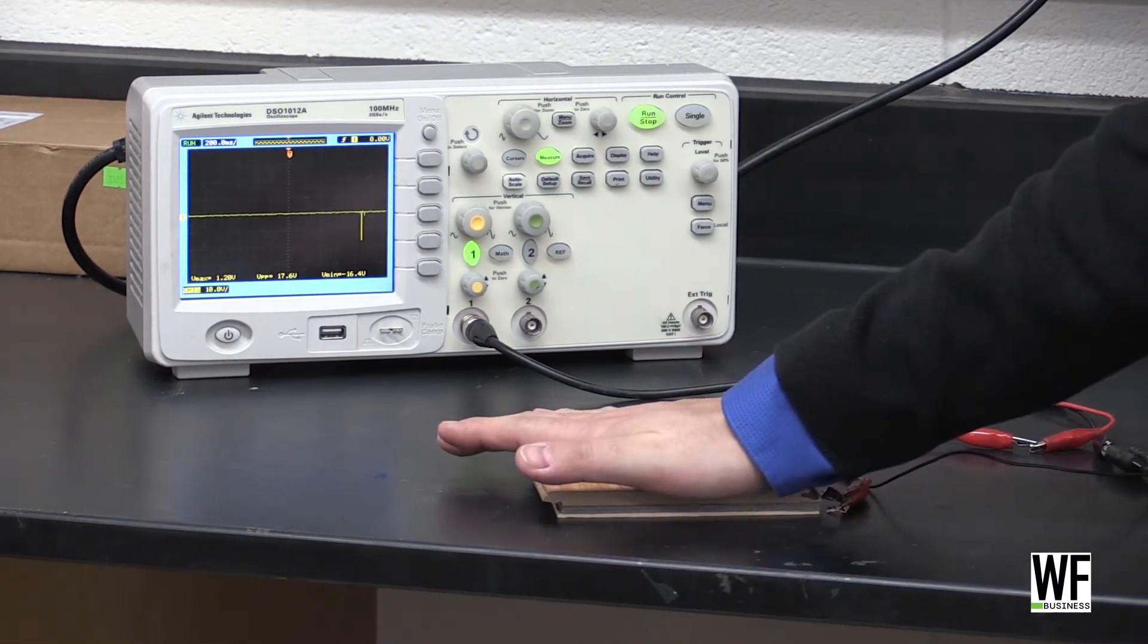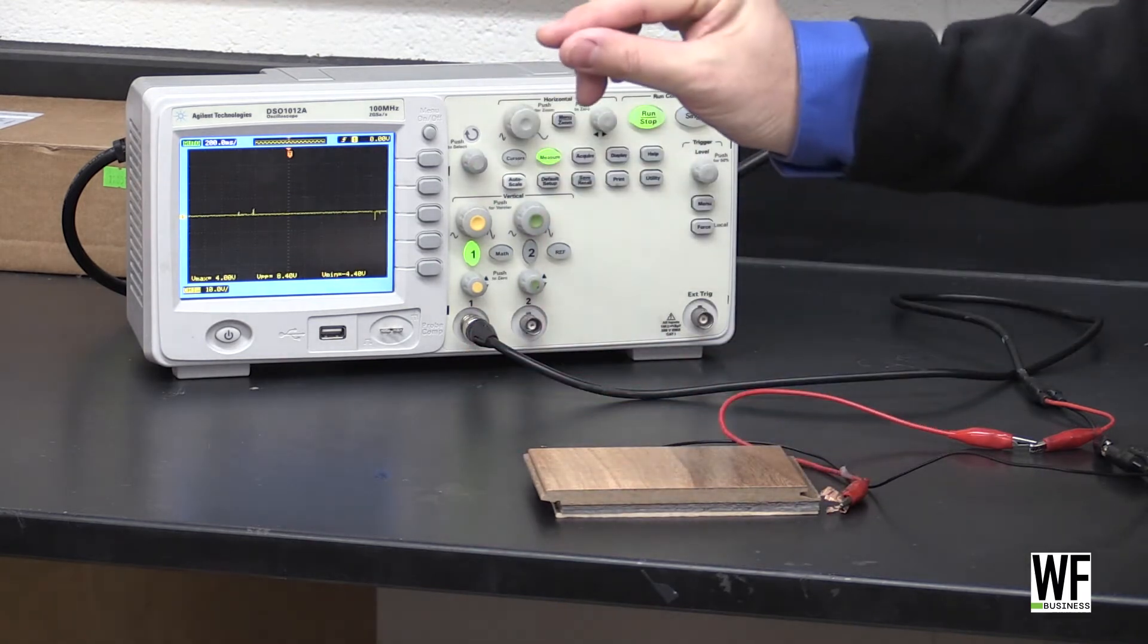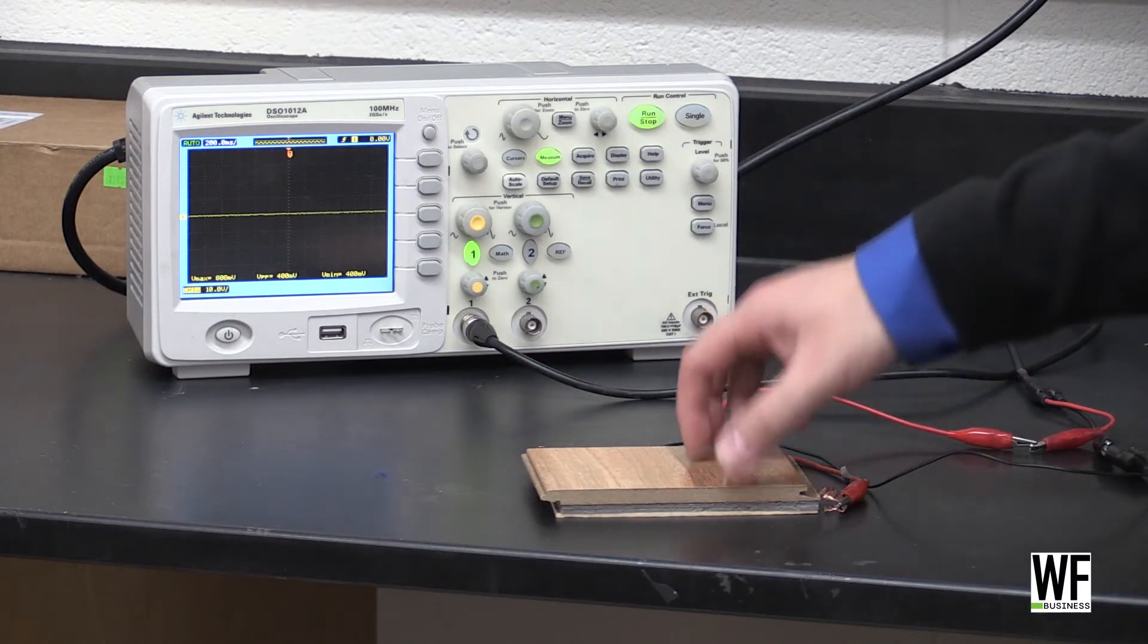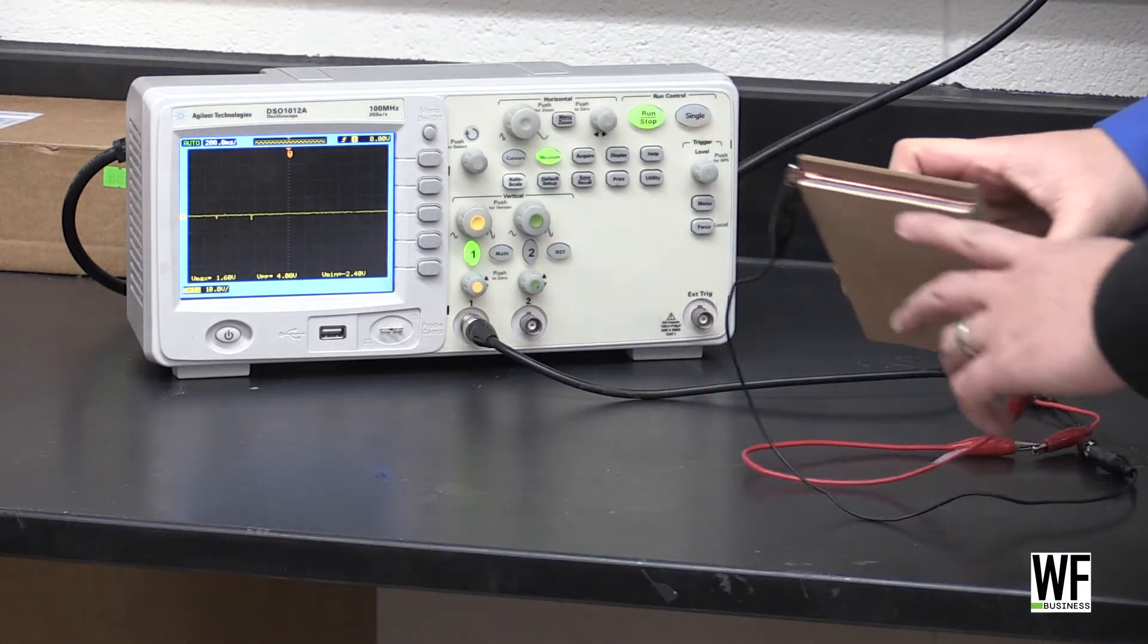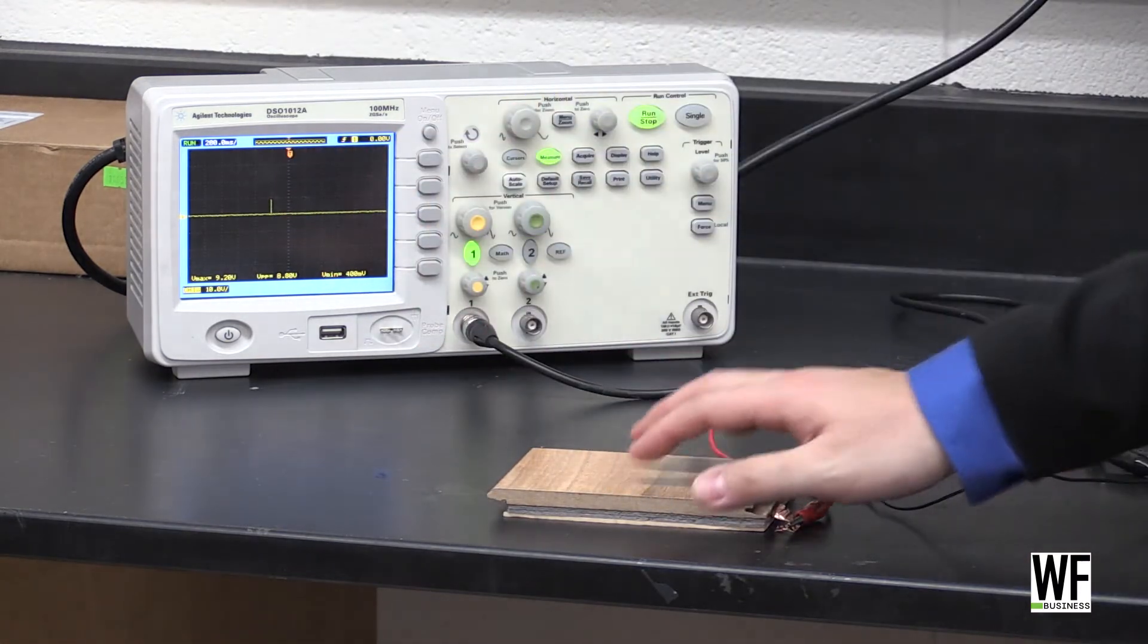Once we step on it or press on it, these two layers will make contact with each other. This will induce charge flow between them, and if we connect them through an external circuit, as you see here, it will produce electric pulses through the external circuit.